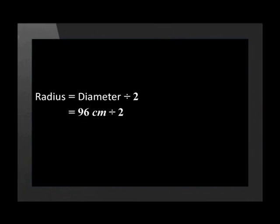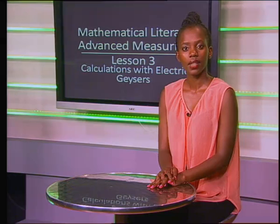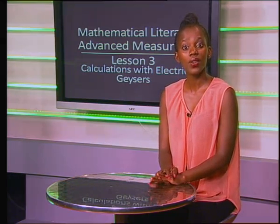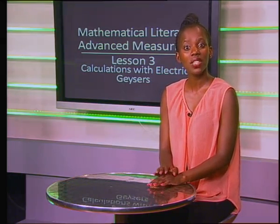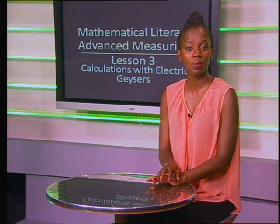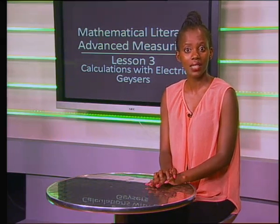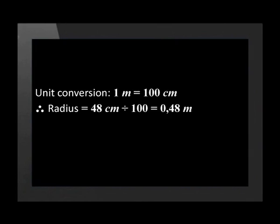Radius equals half of the diameter: 96 cm divided by 2 gives 48 cm. The insulation is sold in square meters, so before we calculate the surface area we need to change our measurements from cm to meters. Remember that there are 100 cm in a meter. The radius equals 48 divided by 100, which is 0.48 meters. The height is 140 cm divided by 100, which is 1.4 meters.